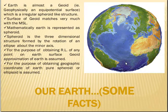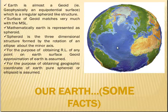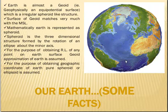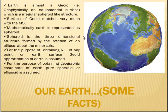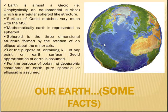Earth, as we know, is bulged from top and bottom and has so many undulations all over its surface. However, we find some spherical nature over the sea surfaces because water has a property to attain shape with the change in gravity.